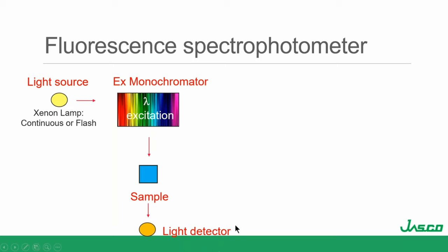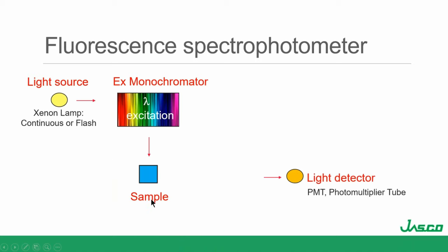Is that a good place to put the detector for fluorescence? No — all of the transmitted excitation light is coming through that way. To our advantage, fluorescence is isotropic — it goes out in all directions. So a better place to put the detector is at 90 degrees, because that's going to minimize any of that scattered excitation light.